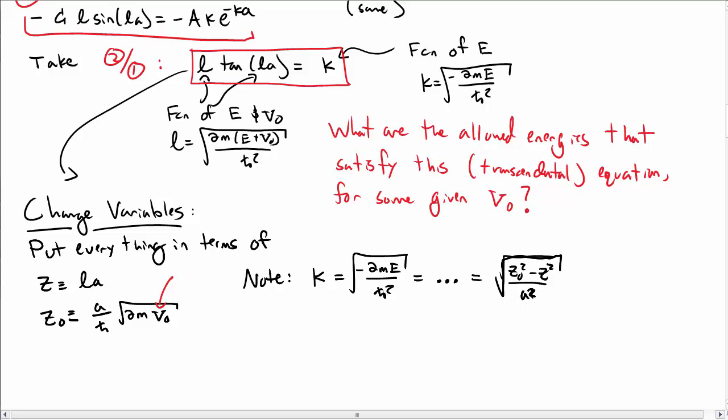Our transcendental equation L tangent of LA equals K. Let's put an a on both sides. So I can rewrite this as Z tangent of Z equals K times a.